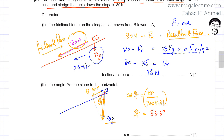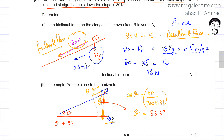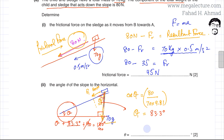This angle theta₁ is 83.3 degrees, but we want the angle of the slope with the horizontal, which is the complementary angle. In a triangle, all angles add to 180 degrees, and with one right angle of 90 degrees: theta plus 83.3 plus 90 equals 180 degrees. Therefore theta equals 6.7 degrees. The angle of the slope with the horizontal is 6.7 degrees.